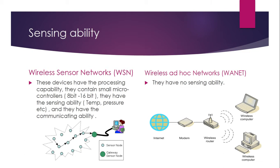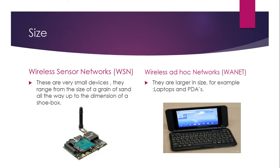When it comes to wireless ad-hoc networks, we have the communicating part — they communicate with one another — and we have the processing part, just like the processors in our laptops or PDAs. But there is no sensing part in wireless ad-hoc networks.